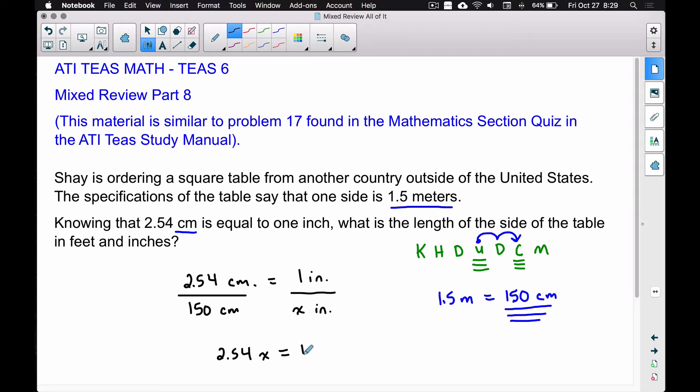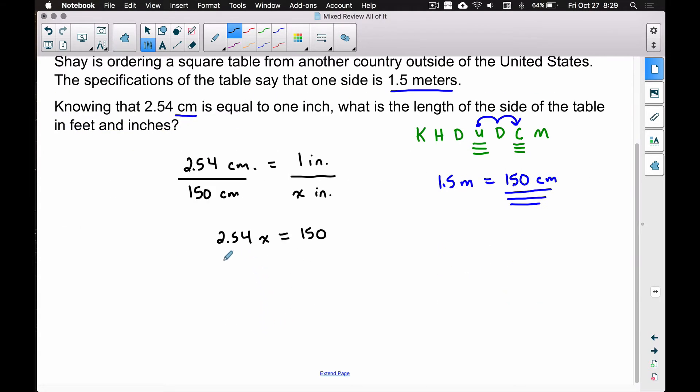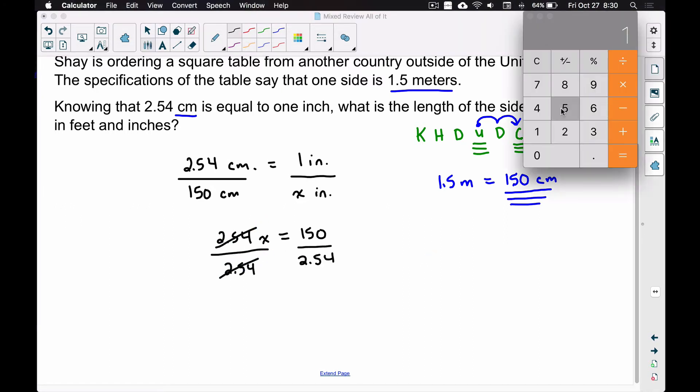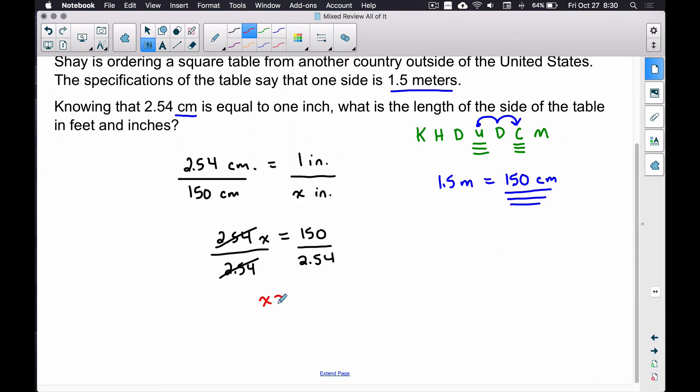2.54 times X is 2.54X. Cross multiplying the other way, 150 times 1 is 150. At this point, I just say multiply the two numbers that you can multiply together, then divide by the number that's getting multiplied by X. We're going to divide by 2.54 to get X by itself. Doing that on the calculator, 150 divided by 2.54 equals 59.055 and so on. If we round this to the nearest inch, that's pretty close to 59 inches. So X is pretty close to 59 inches. Therefore, 1.5 meters is equal to, or pretty close to, 59 inches.